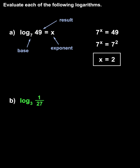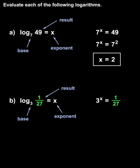In part B, we have log base 3 of 1/27. To evaluate this logarithm, we set it equal to x and convert the logarithmic equation to exponential form. The base of the log represents the base of the power, the right side represents the exponent, and the number inside the log represents the result. So we have 3 to the x equals 1/27.